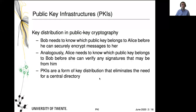If you recall, the goal that we have is to enable key distribution in public key cryptography. In simple terms, Bob needs to know which public key belongs to Alice before he can securely encrypt messages to her. And analogously, Alice needs to know which public key belongs to Bob before she can verify any signatures that may be from him.